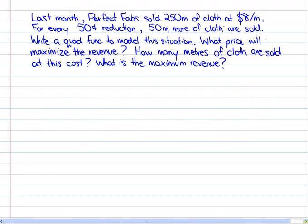We're going to look at Perfect Fabs selling cloth. So as we know, revenue is equal to cost times number sold. In this particular case, we're looking at Perfect Fabs, and they sell 250 meters of cloth at $8 per meter. And for every 50 cent reduction, they sell more cloth. Write a quadratic function, what price maximizes the revenue, how many meters of cloth are sold, and what is the maximum revenue.